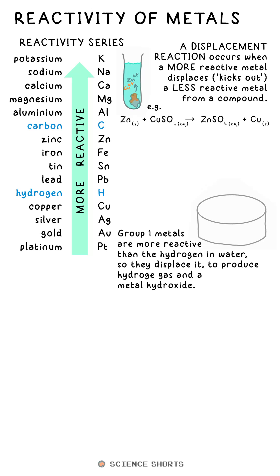We know that alkali metals react with water. The reaction happens because, for example, potassium is more reactive than hydrogen. So in essence, it displaces it from the water, leaving potassium hydroxide, and hydrogen gas is produced.